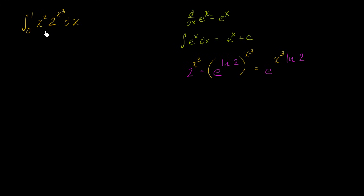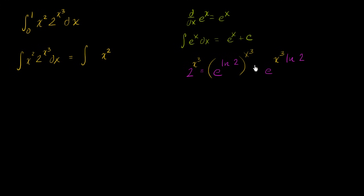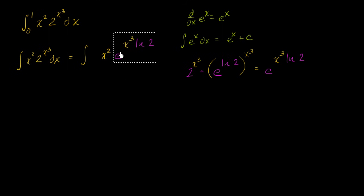So that already seems pretty interesting. What I'm going to do is focus on the indefinite integral first, see if we can figure that out, and then evaluate the definite one. So let's think about the indefinite integral of x squared times two to the x to the third power dx. I really want to find the antiderivative of this. This is the same thing as the integral of x squared times e to the x to the third times the natural log of two dx. I was able to get it in terms of e as a base, but it still seems pretty complicated.